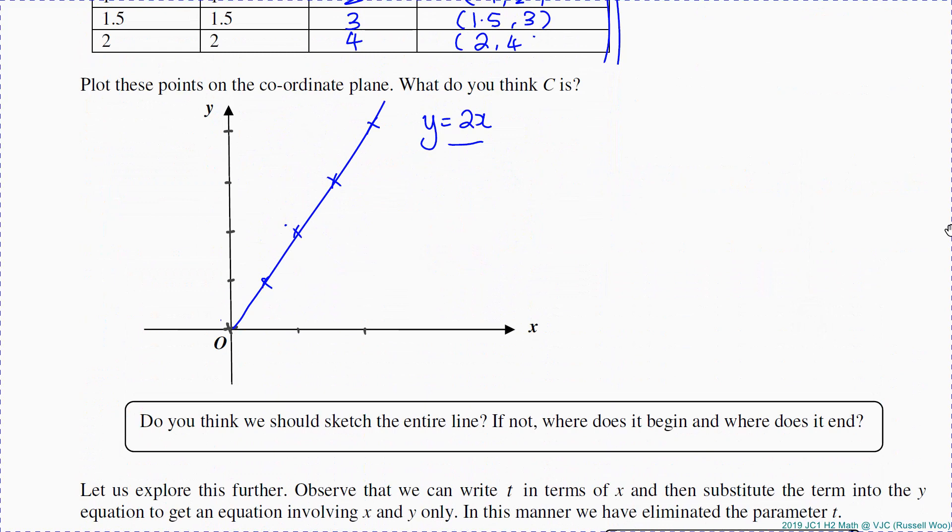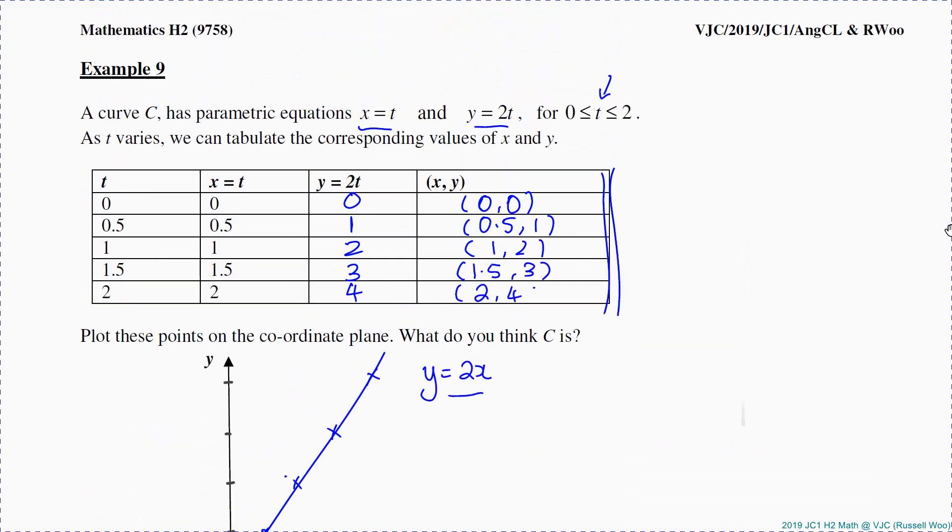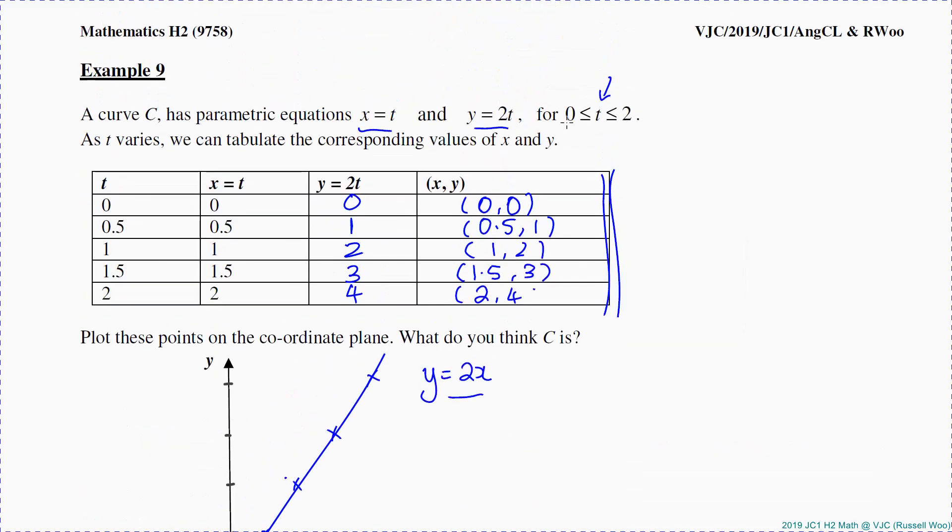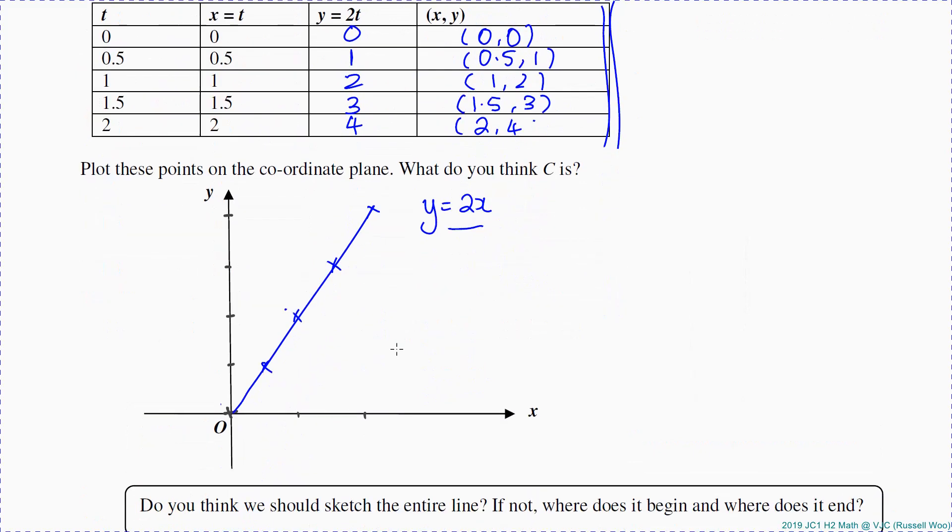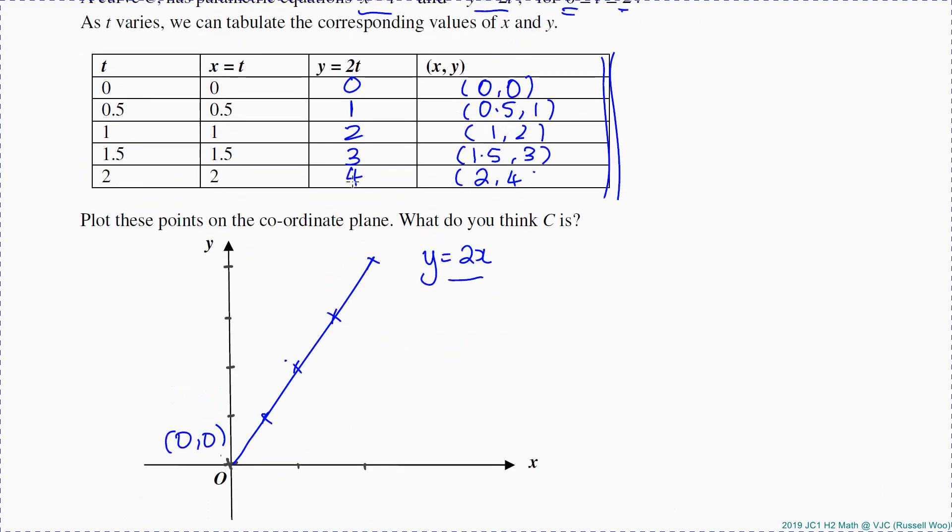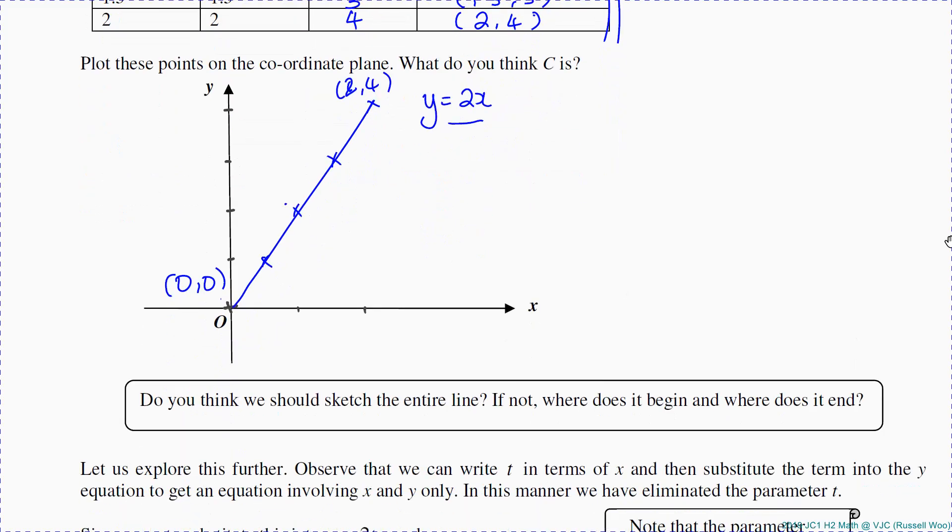There's a question here. Do you think we should sketch the entire line y = 2x? Actually no, because t can only take on between 0 and 2. In fact I made a slight mistake. I should end my line here. You should start off with (0, 0), you should end off with (2, 4). That's all.